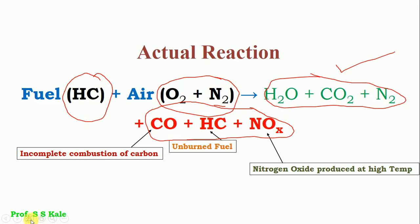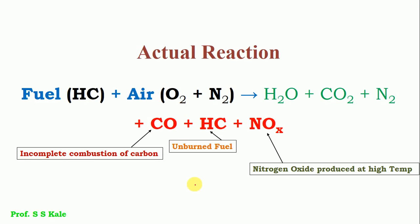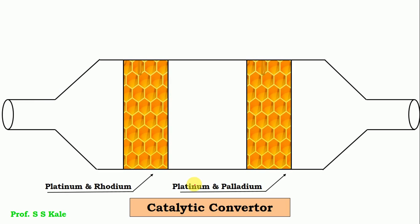Now let's discuss how these pollutants can be controlled using a catalytic converter. The catalytic converter is located after the engine — the exhaust pipeline of the engine is connected to one end of the catalytic converter, while the other end connects to the silencer, from which gases go to the atmosphere.